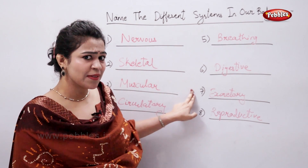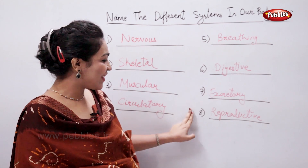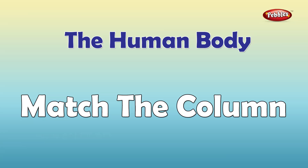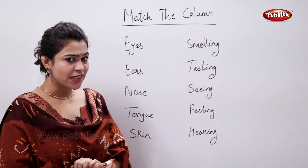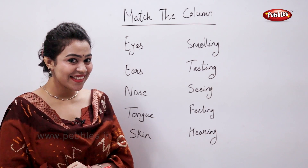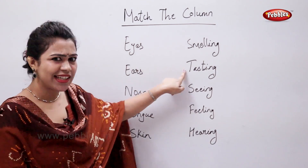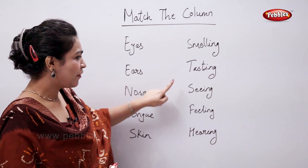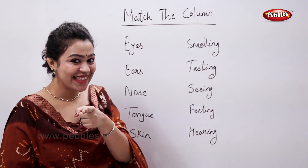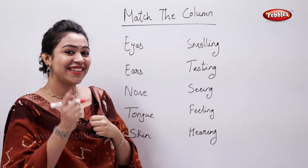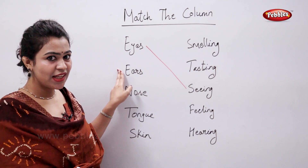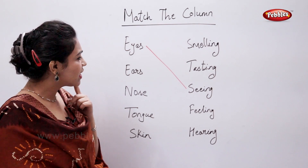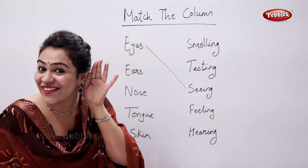Match the column. Come on students, tell me what is the function of eyes? Tasting or feeling? That's seeing — correct! Ears — what is the function of ears? That's hearing.